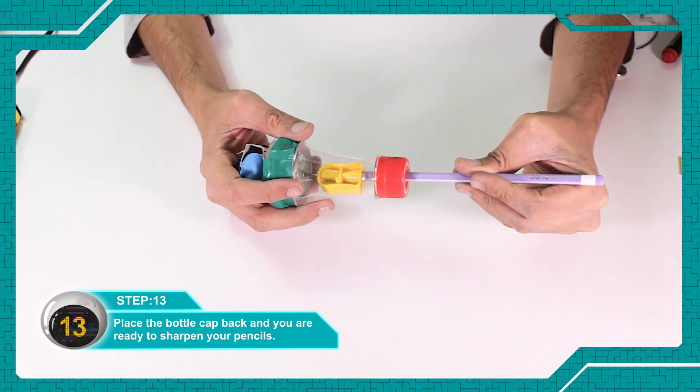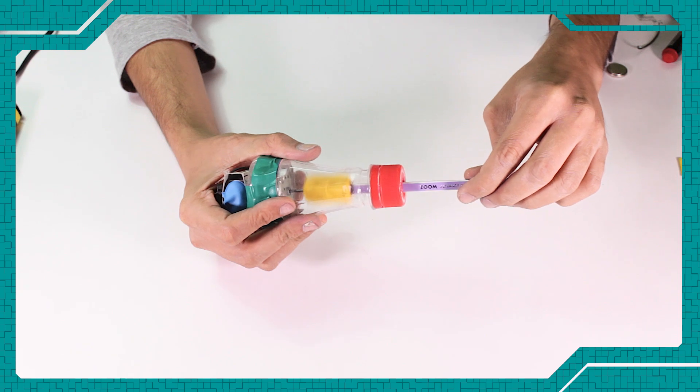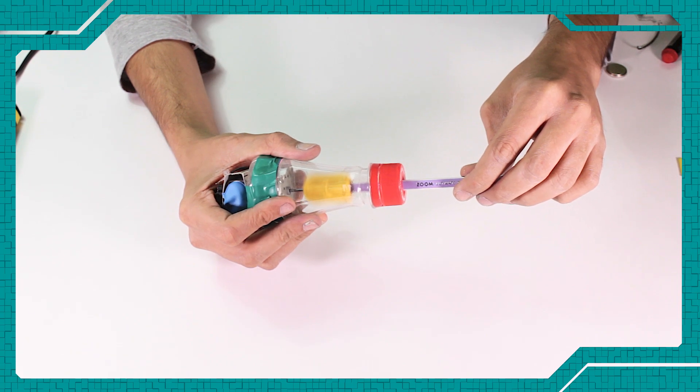It would be better to use a lower RPM and higher torque motor for the electric sharpener to work more efficiently.